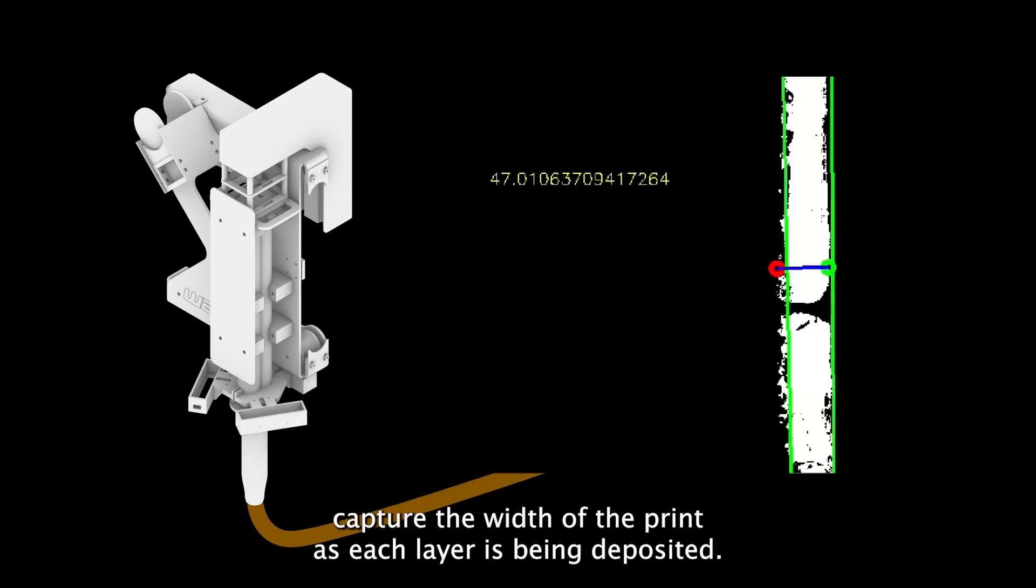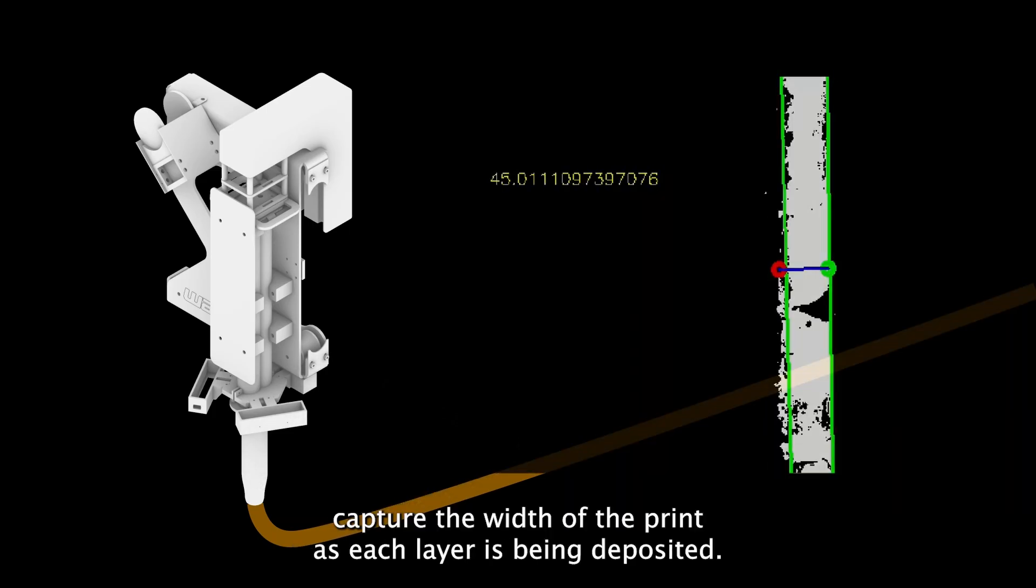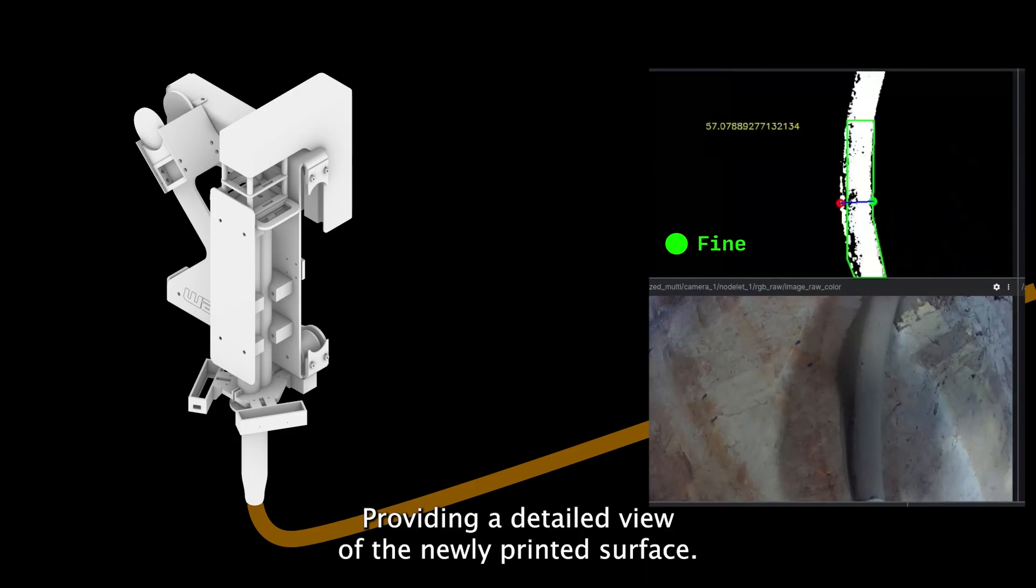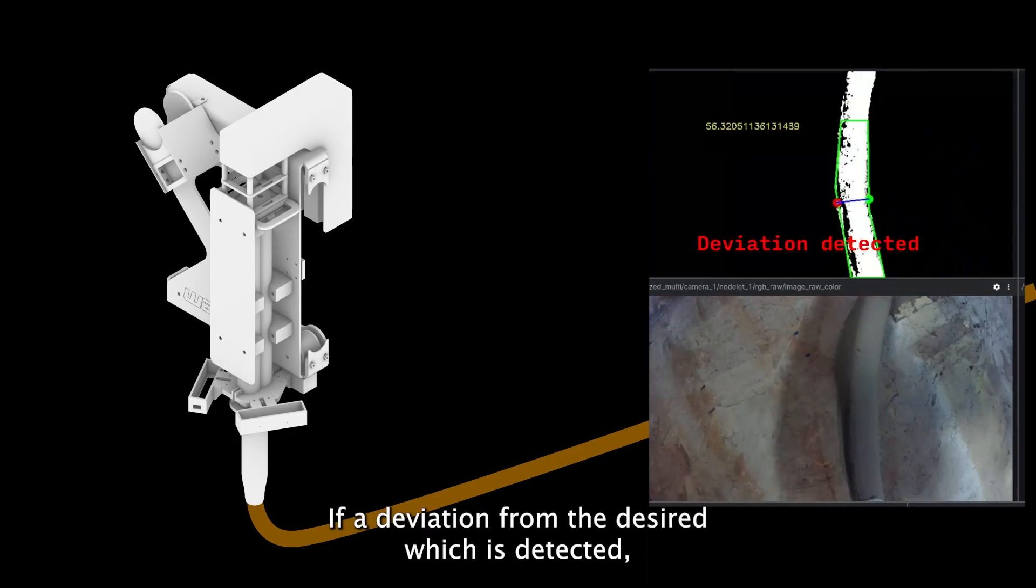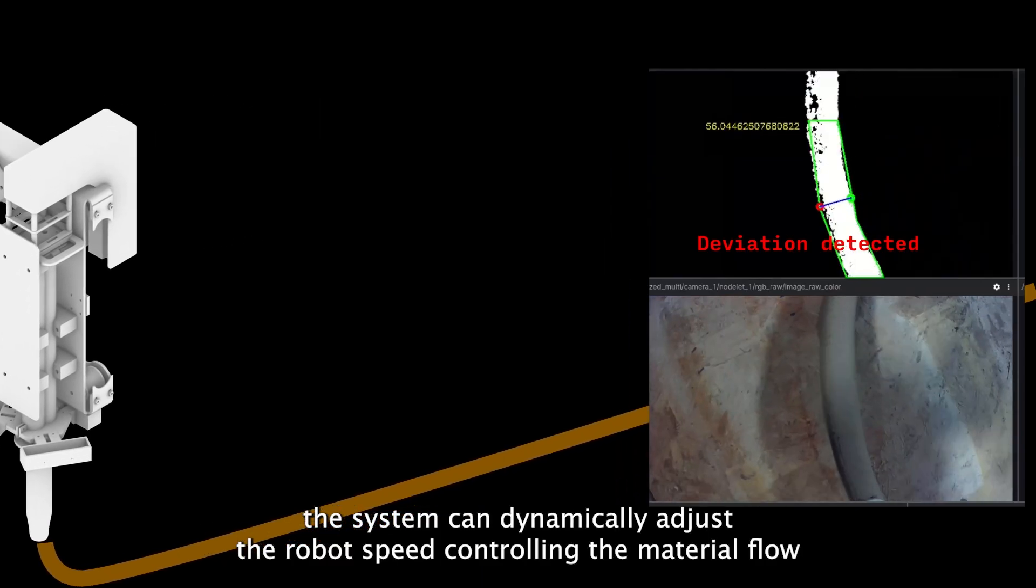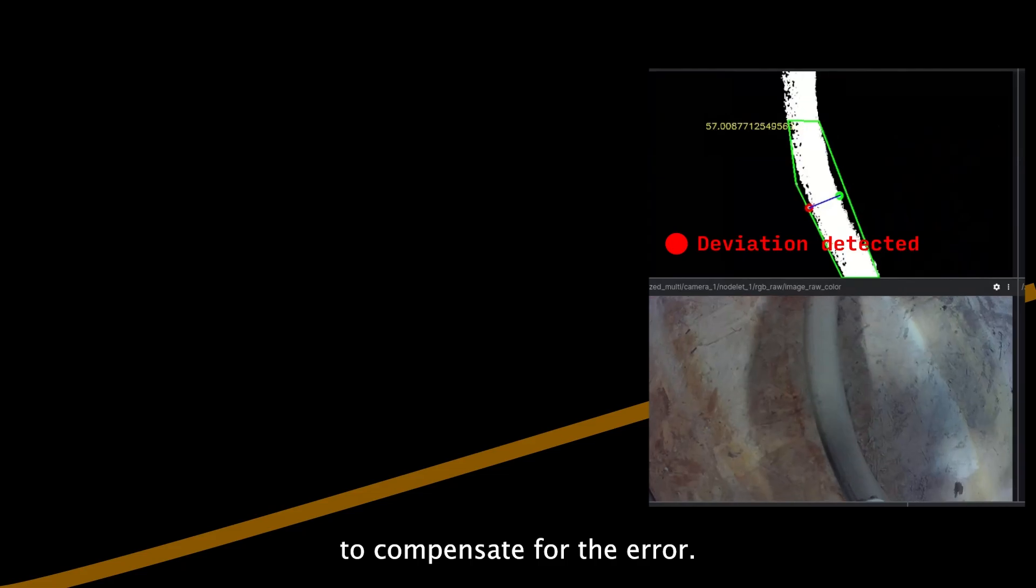The depth cameras capture the width of the print as each layer is being deposited, providing a detailed view of the newly printed surface. If a deviation from the desired width is detected, the system can dynamically adjust the robot speed, controlling the material flow to compensate for the error.